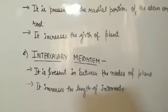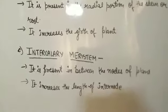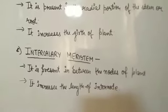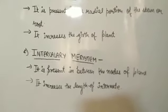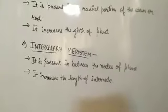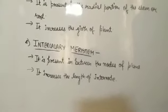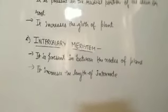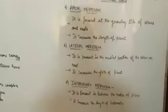Intercalary meristematic tissue is present between the nodes of the plant. It is present in between the nodes and it increases the length of the internode — it increases the space between two nodes. These are the positions and main functions of the three meristematic tissues.